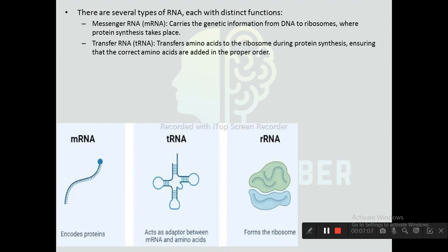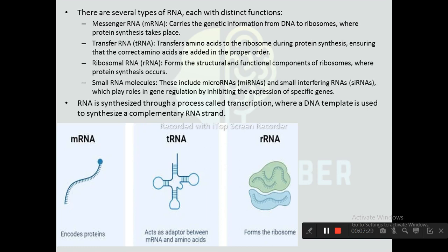There are several types of RNA, each with a distinct function. Messenger RNA (mRNA) carries genetic information from DNA to ribosomes where protein synthesis takes place. Transfer RNA (tRNA) transports amino acids to the ribosomes during protein synthesis, ensuring the correct amino acids are added in the proper order. Ribosomal RNA (rRNA) forms the structural and functional components of ribosomes where protein synthesis occurs. Small RNA molecules, including microRNAs and small interfering RNAs, play roles in gene regulation by inhibiting the expression of specific genes.